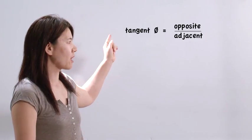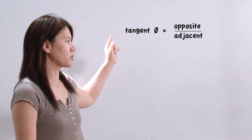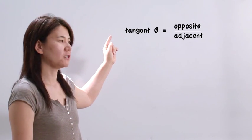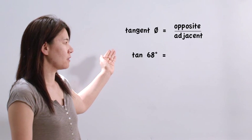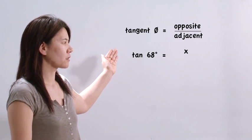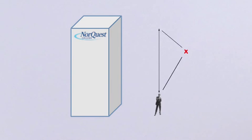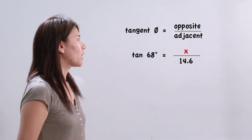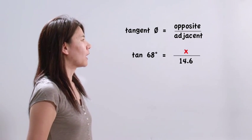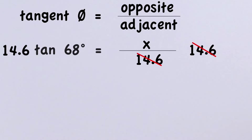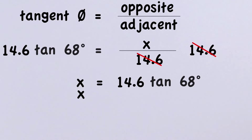Tangent theta is equal to opposite over adjacent. Theta is the angle of inclination, which is 68 degrees. Tangent 68 equals x over 14.6, where x is the height from the clinometer to the top of the building. In order to isolate x, multiply 14.6 on both sides of the equation. Therefore, x is equal to approximately 36.14 meters.